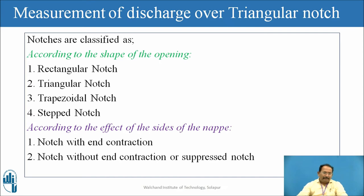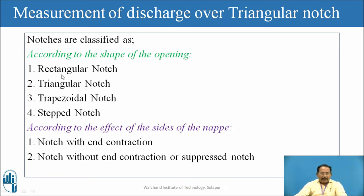Now, how are they classified? They are classified according to their shape and according to the effect of sides of the nappe, that is with end contractions. According to shape, there are four types: rectangular, triangular, trapezoidal, and stepped. According to the effect of sides of the nappe: notch with end contractions and notch without end contractions.